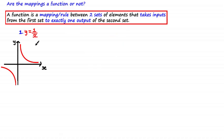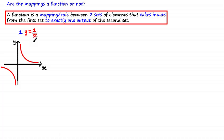Is the mapping y = 1/x a function or not? If the set of possible inputs is not defined, it's assumed that you can input any real value into x. By definition, a function takes all inputs and maps each to exactly one output. But when we input x = 0, we get y = 1/0, which is undefined — a math error on your calculator. So this doesn't satisfy the definition of a function because not all values of x give a defined unique output. Therefore, this is not a function.